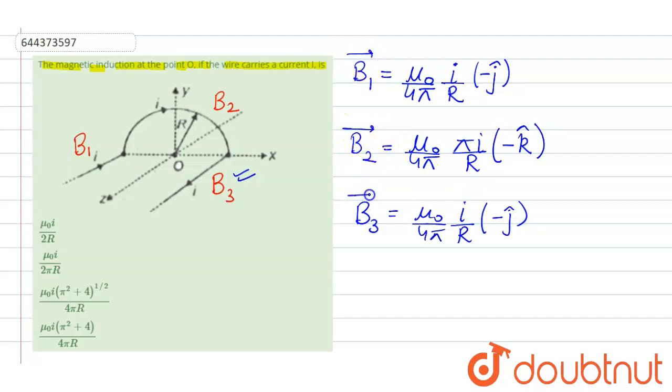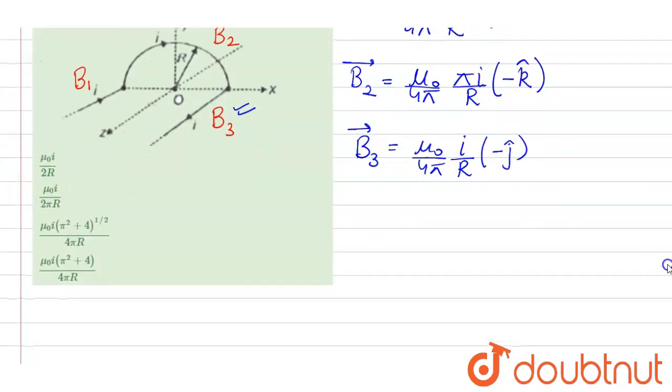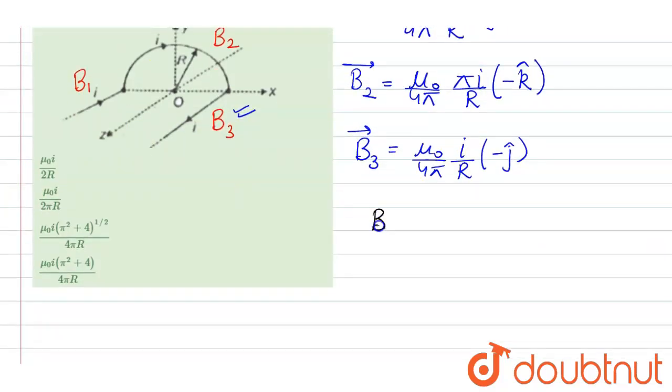So to calculate the net magnetic field that is B net will be equal to B1 plus B2 plus B3.